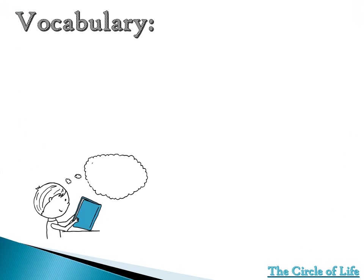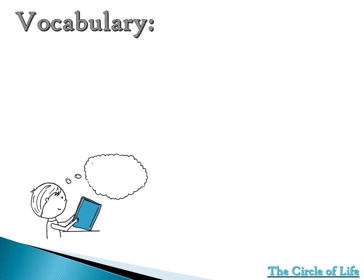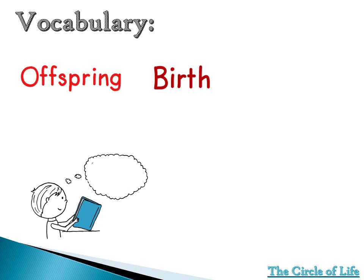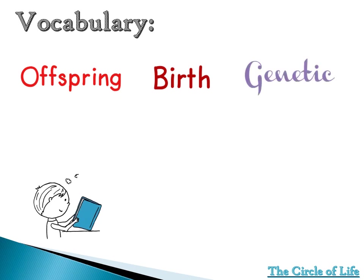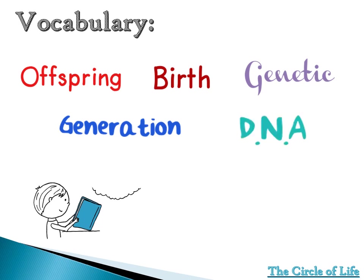In order for us to understand better, we need to learn and remember a few words. Let us have our vocabulary and try repeating these words after me. First, we have offspring. Birth. Genetic. Generation. DNA. Trait.